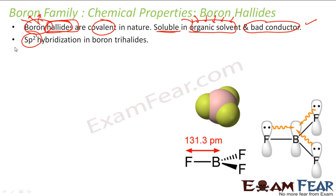BCl3 has sp2 hybridization because boron has only 3 electron pairs — 1, 2, and 3 — giving 6 electrons total, so it is sp2 hybridized. The B–F bond length is 1.3 picometers. This is the sp2 hybridized boron trihalide shape.